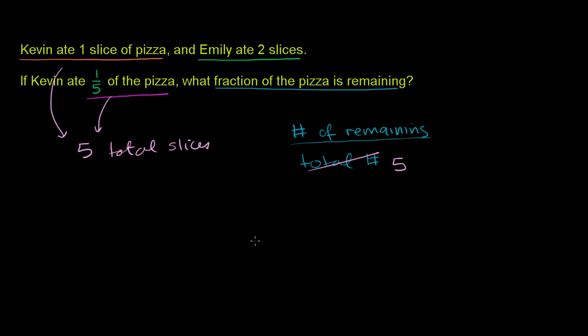And now what are the number of slices remaining? So we started off with five total slices. Kevin ate one, so let's subtract out the one that Kevin ate. Emily ate two, so let's subtract out those two. We're left with five minus one minus two, we're left with two slices remaining. Two remaining slices. So this right over here is going to be two. So there's two fifths of the pizza remaining.